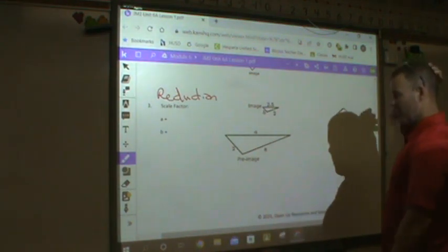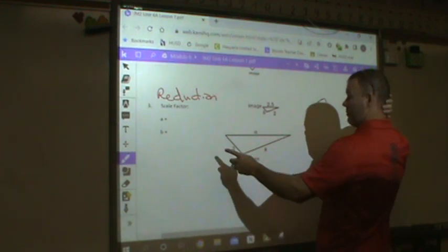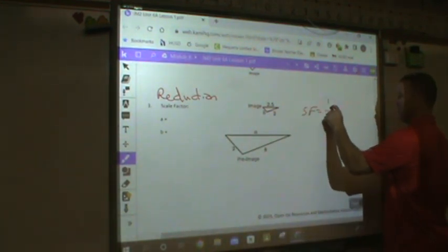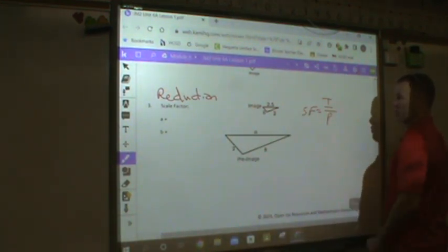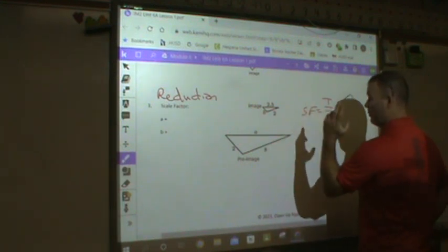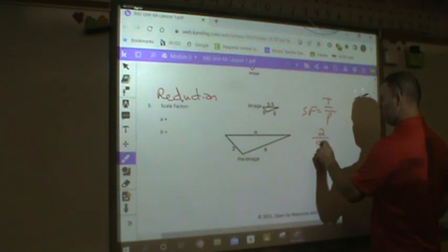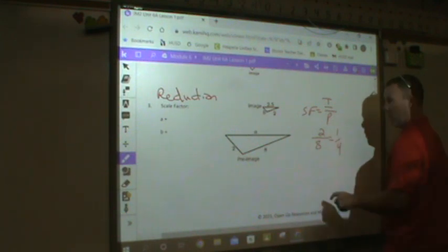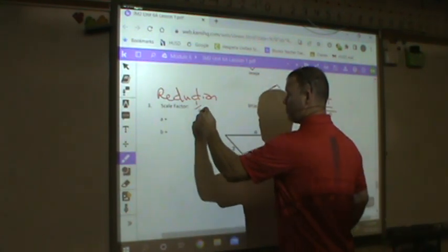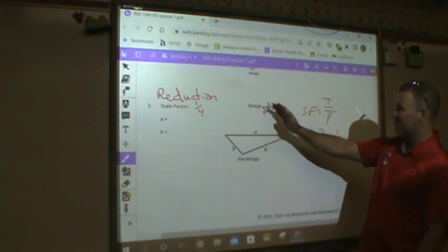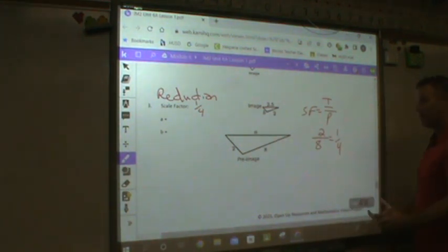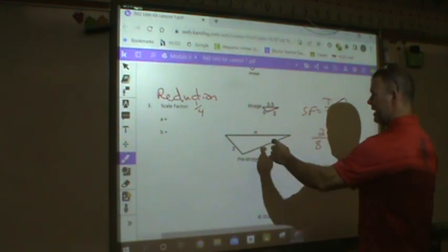Okay? So what's my scale factor? Well, remember, my scale factor is I over P, or image over pre-image. So I'm going to pick a point in the image, 2, and a point in the pre-image, which is 8, and that reduces to 1 fourth. So my scale factor is 1 fourth. The smaller figure is a quarter of the size of the original figure. That's what it means. So how do I find a? Well, a, here's my work, a times my scale factor should be equal to 2.5.